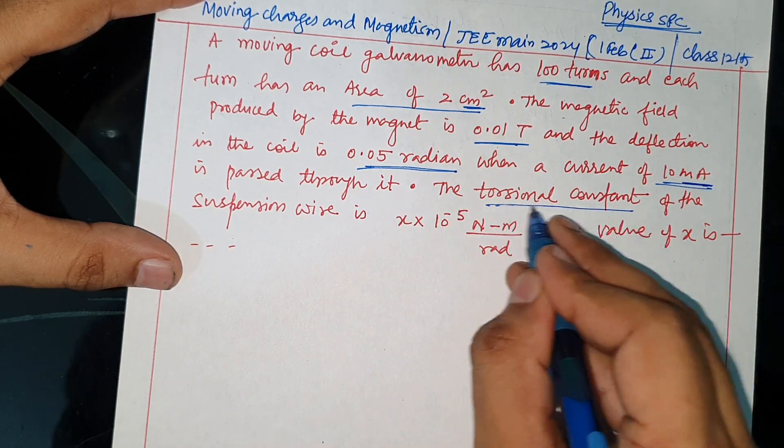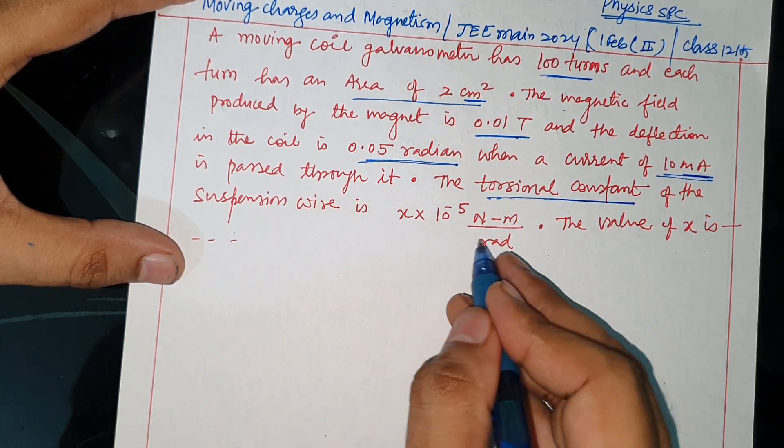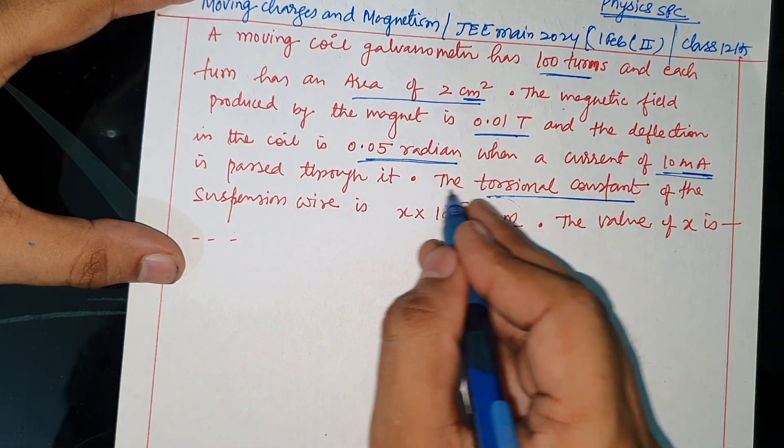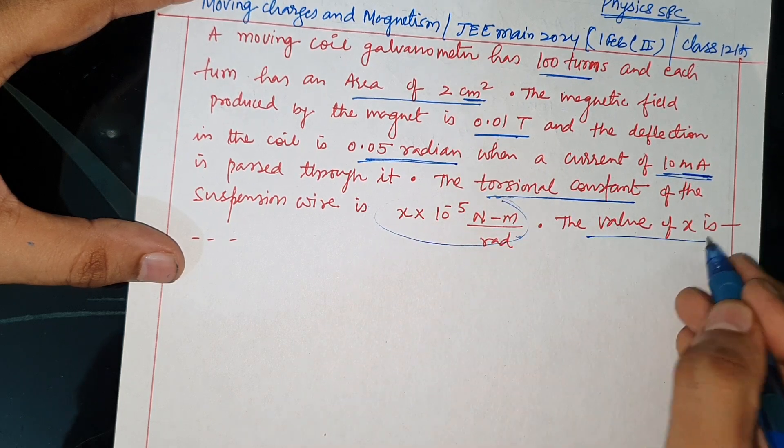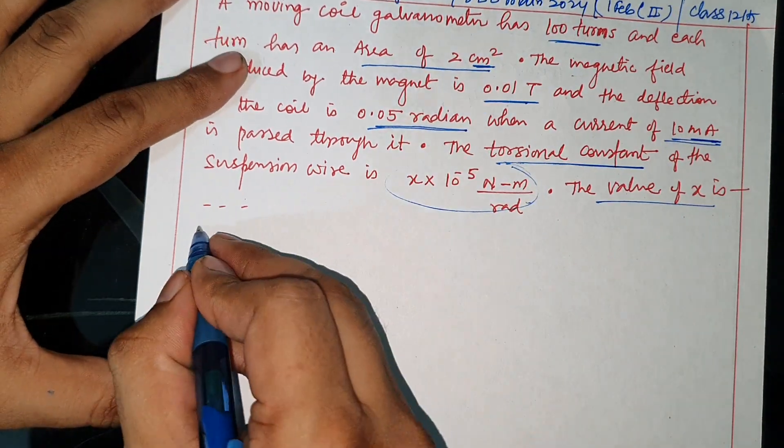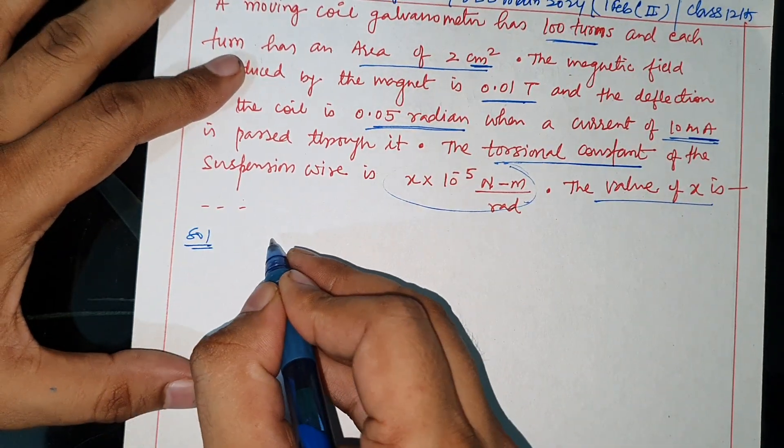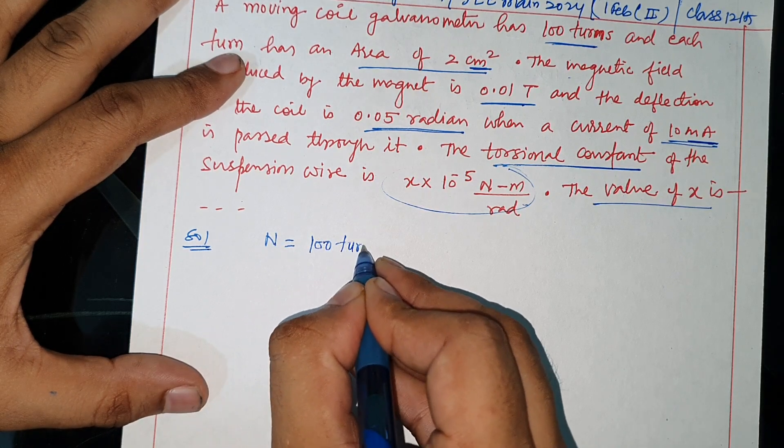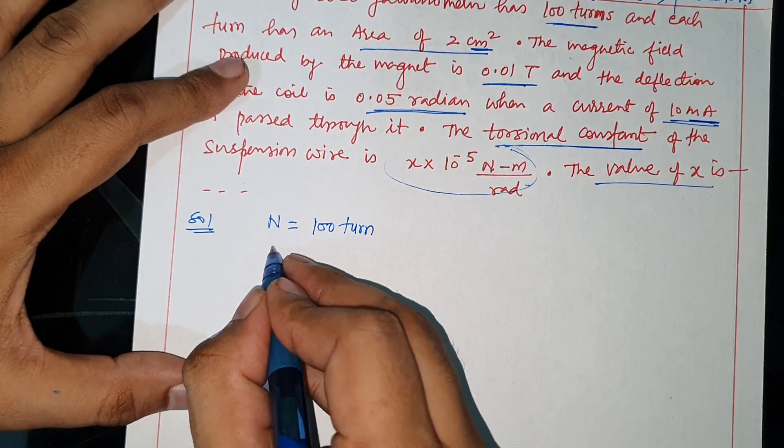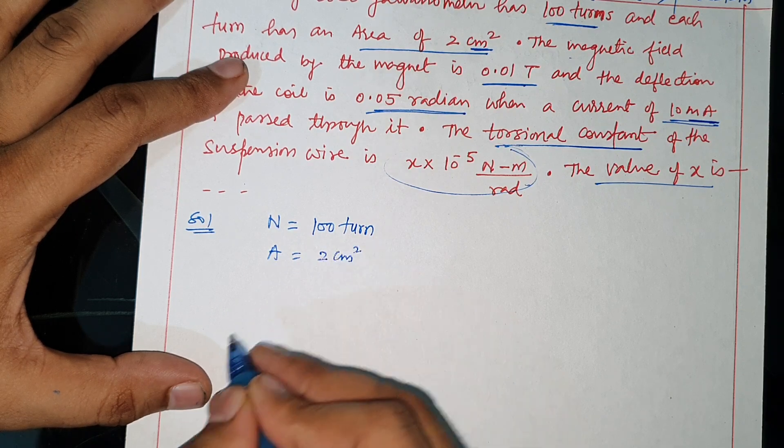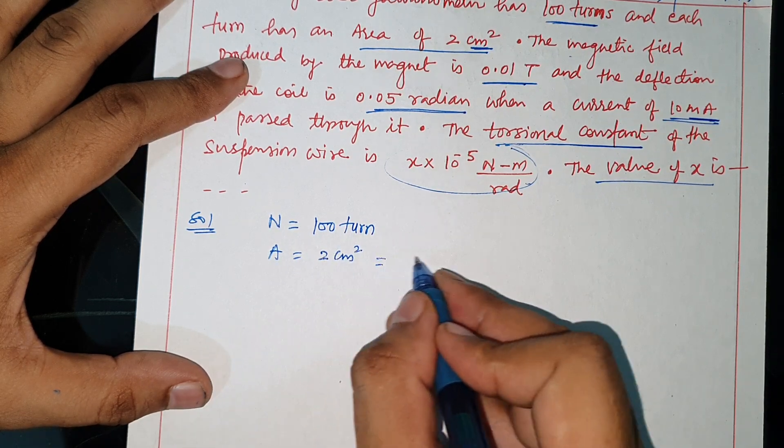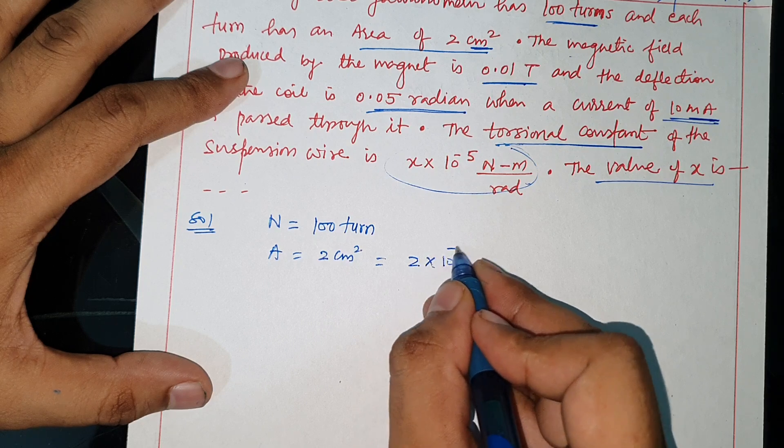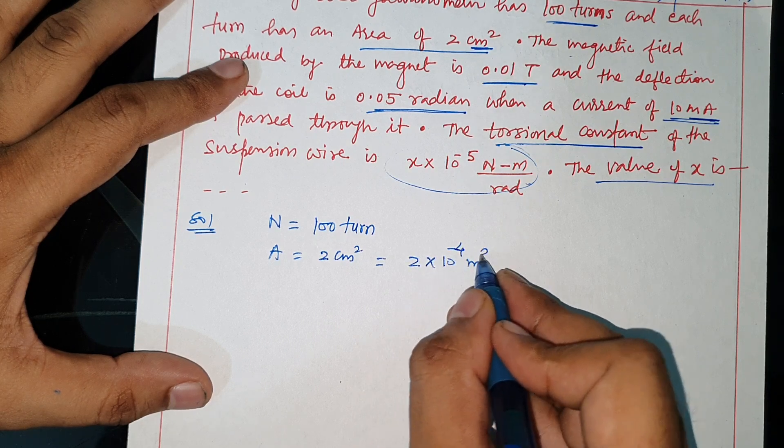The torsional constant of the suspension wire is given as x times 10 to the power minus 5. Question solution: First, what is given - number of turns N = 100 turns, and area given is 2 cm² which is 2 into 10 power minus 4 square meter.